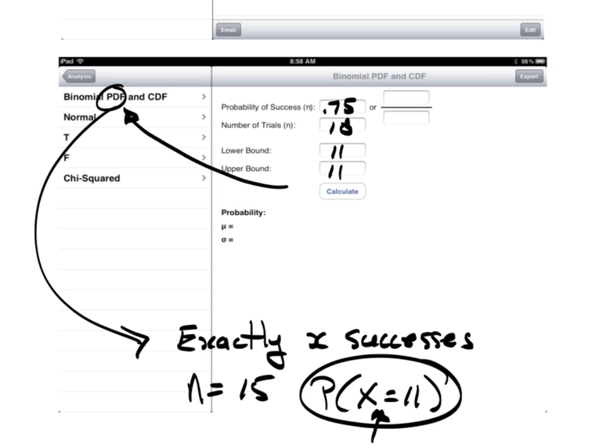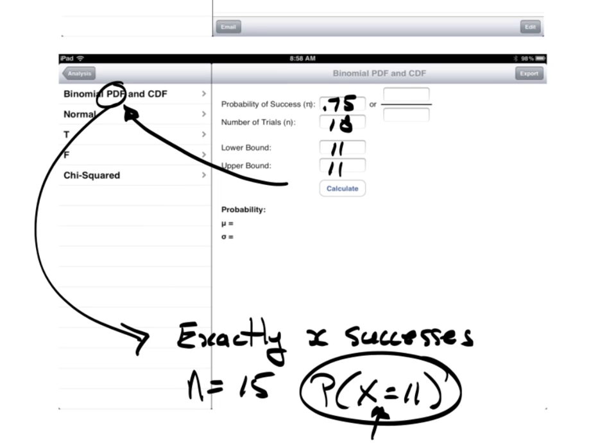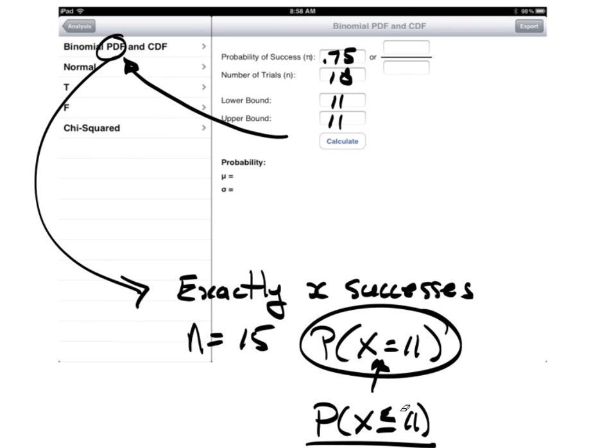Now, on the other hand, if I was interested in this scenario of probability of less than or equal to 11, then this lower bound would change. That would be 0, and the upper bound would be 11. So, list this out. I said this is an 18. It did get kind of sloppy, but that is an 18.